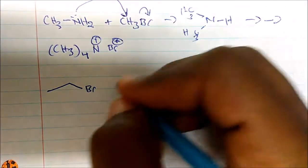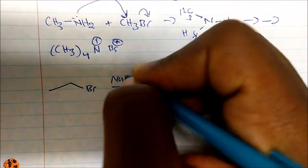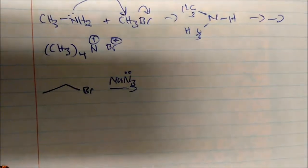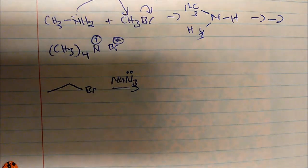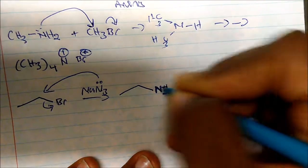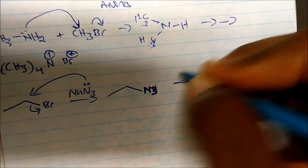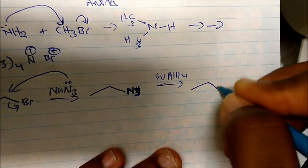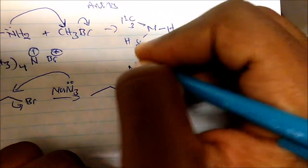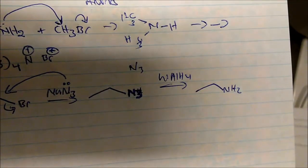This is where we use azide chemistry. We take a normal SN2 target and add sodium azide (NaN3). The nitrogen has a lone pair and acts as a nucleophile, attacking to displace the bromine, forming a bond to N3. We then reduce with lithium aluminum hydride to get the primary amine (NH2). As a side note, azide (N3) is actually what's in the airbag in your car.